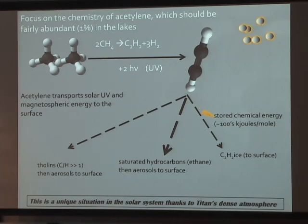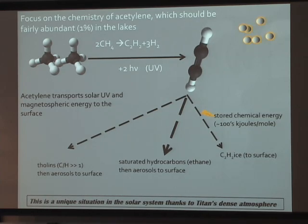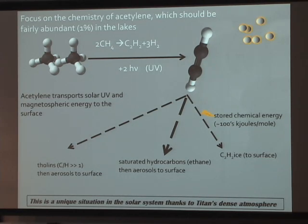The other interesting thing about Titan in terms of primitive life is that the chemistry provides a natural way to carry ultraviolet photons from the sun down to the surface — through the production of acetylene. Two methanes go to form acetylene. Acetylene can then undergo reactions at the surface, ranging from conversion to benzene, conversion to polyacetylenes, or possibly, if there's a source of hydrogen, conversion back to methane. Because the bonds are unsaturated, there's a significant amount of stored chemical energy.